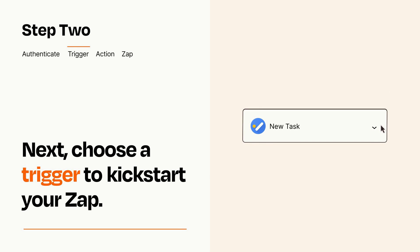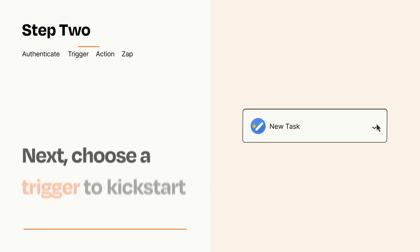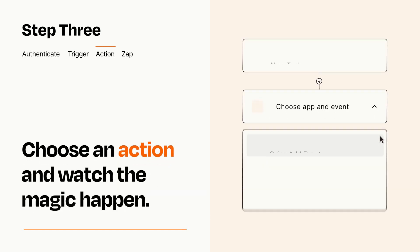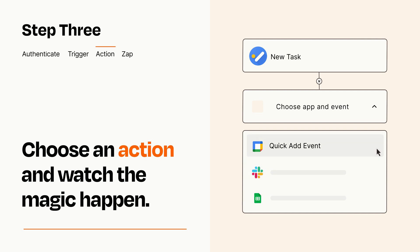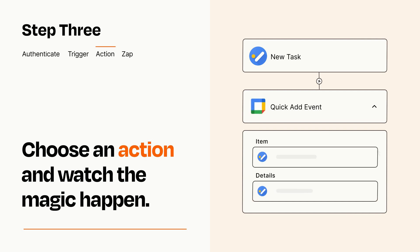This last part is where the magic happens. Choose the action you want to happen in your target app. You'll see a bunch of fields where you can specify the details of your Zap. You can type free-form text or pull data in from your trigger step as needed.